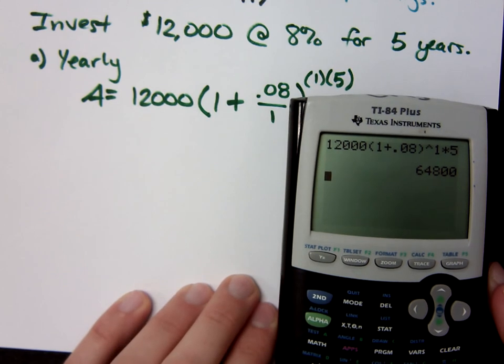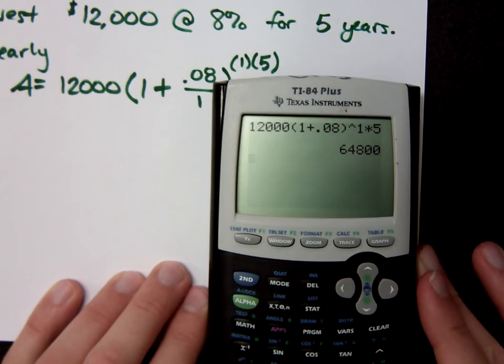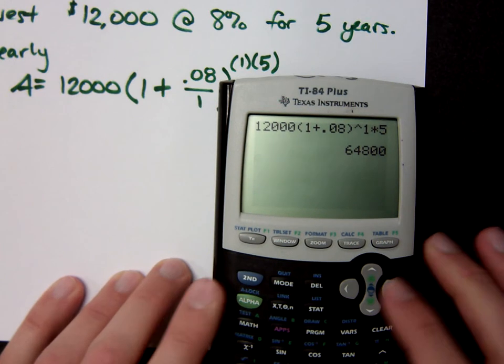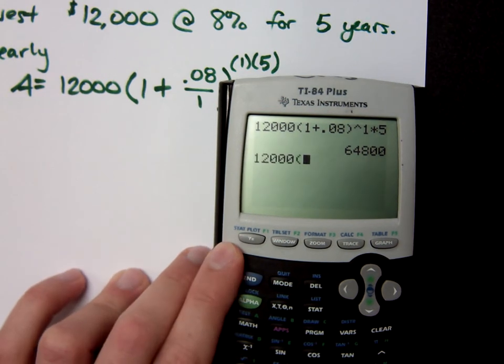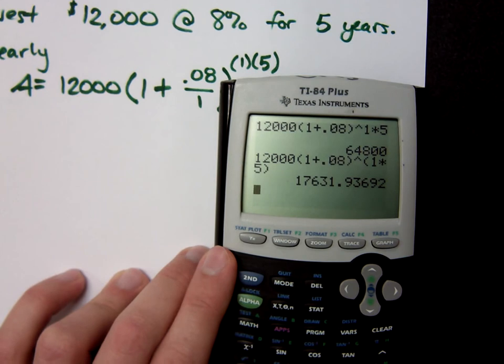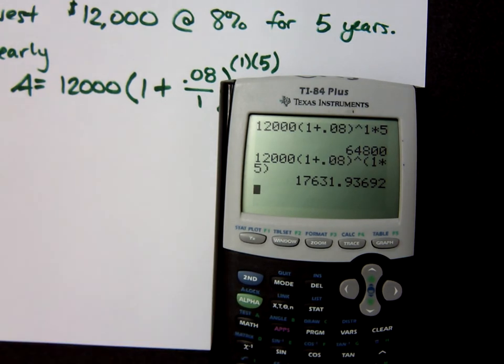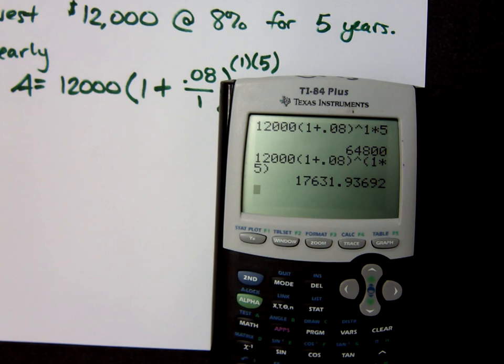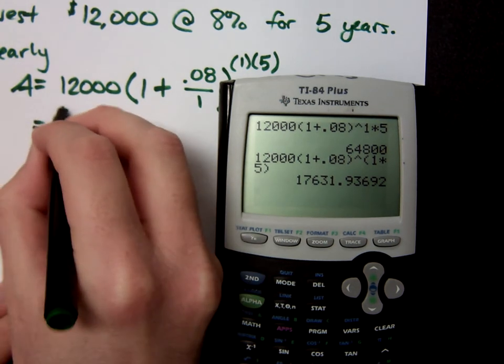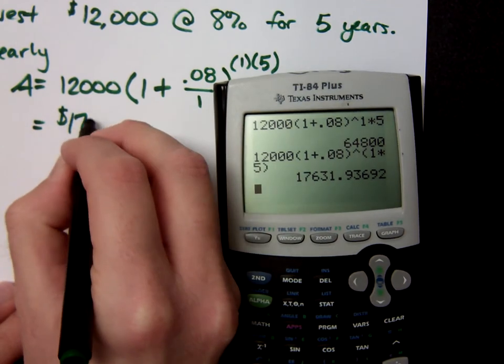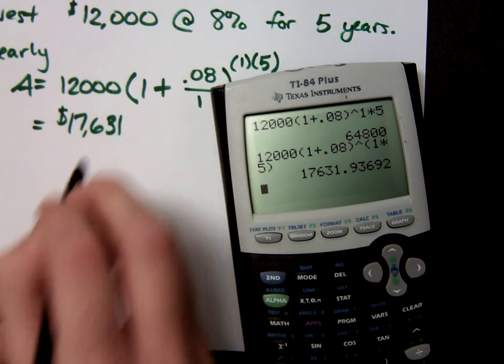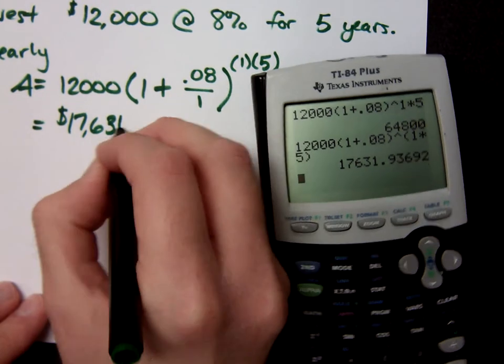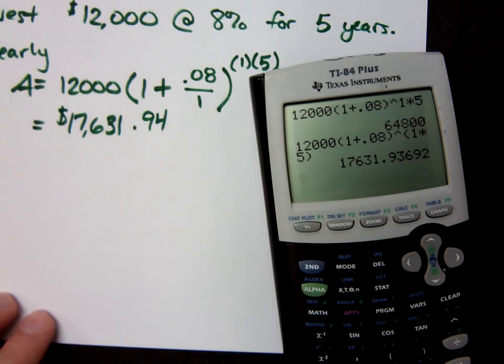Well, the math is just wrong. So it's 12,000, 1 plus .08, raised to the 1 times 5 in parentheses. That's how much money I have. Now, since we are talking about money, how do we round appropriately here? To the 100th. So that's $17,631.94.